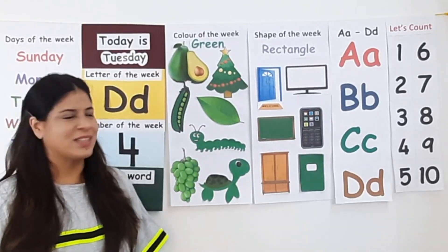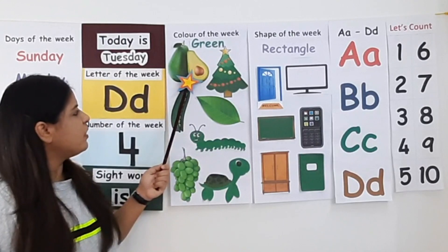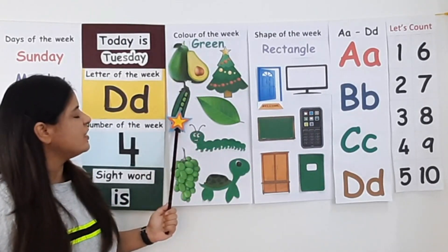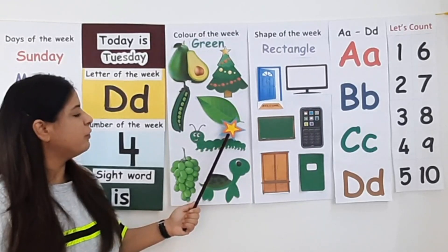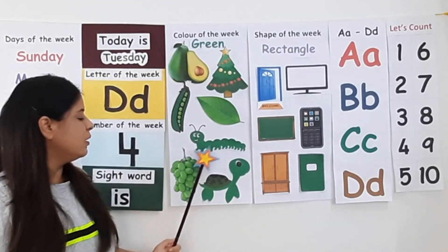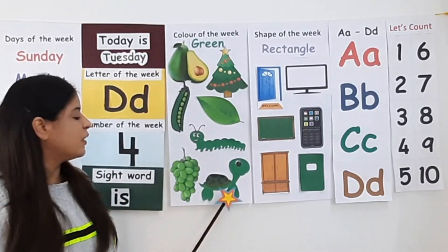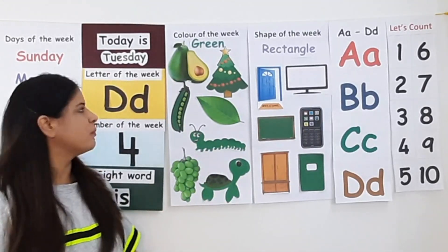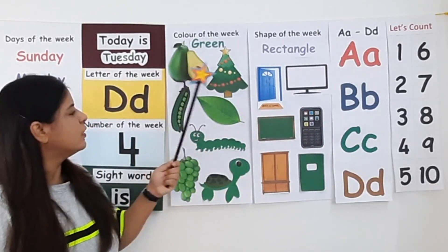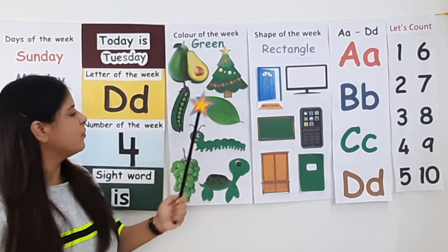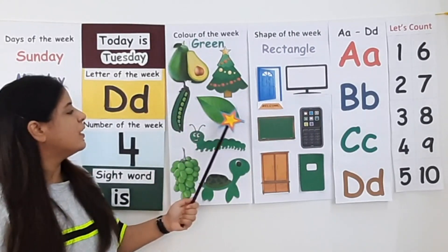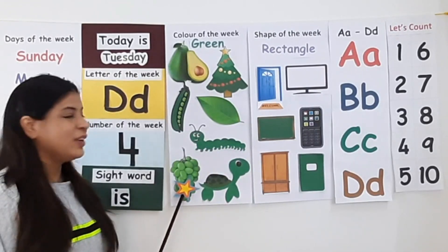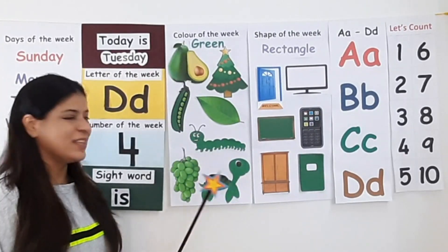Now let's see the pictures. Green avocado, green Christmas tree, green peas, green leaf, green caterpillar, green grapes, green tortoise. Now say along with me: green avocado, green Christmas tree, green peas, green leaf, green caterpillar, green grapes, green tortoise.